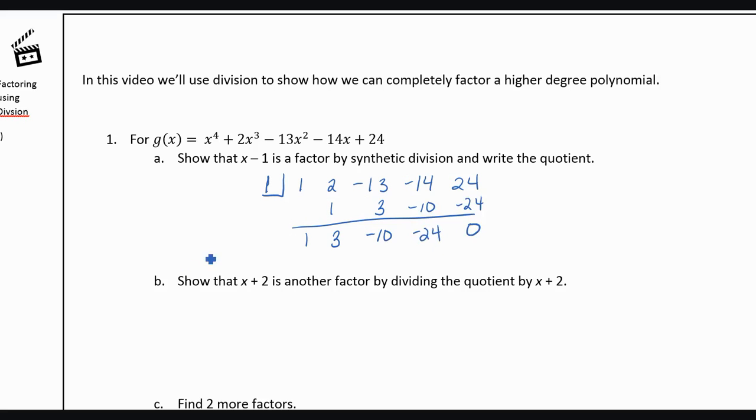So what this tells us is that our original polynomial is equal to x minus 1 times, that was x to the fourth, so we're going to start with x cubed. x cubed plus 3x squared minus 10x minus 24.